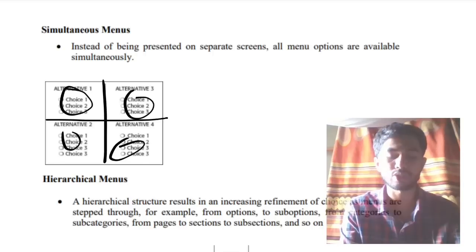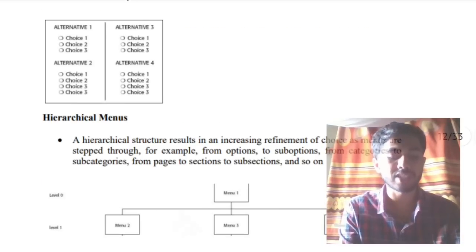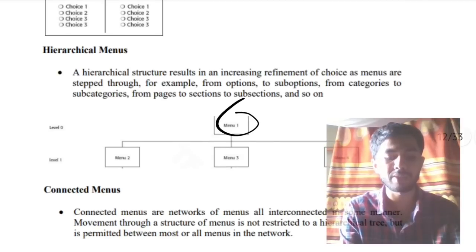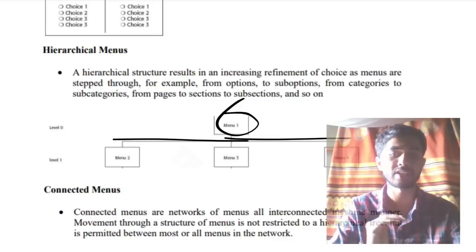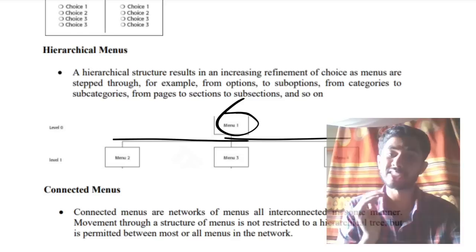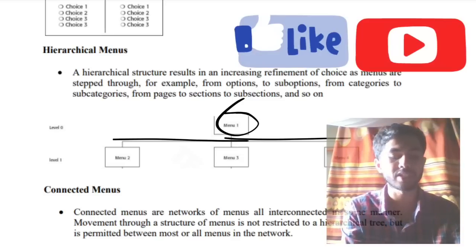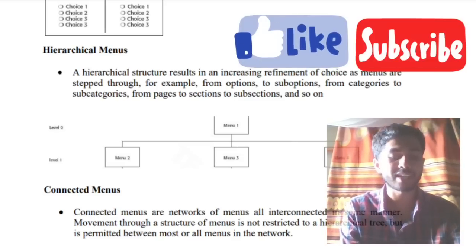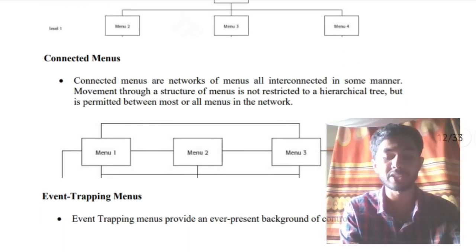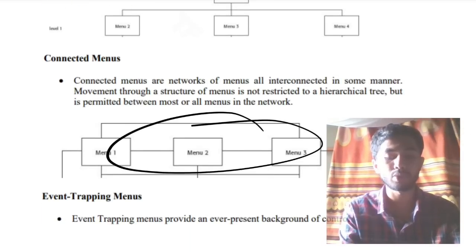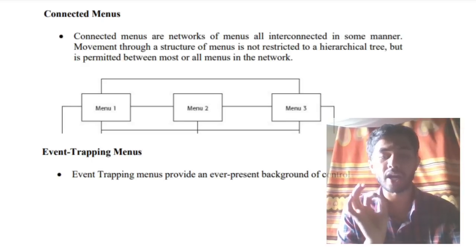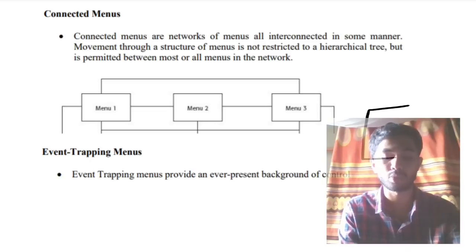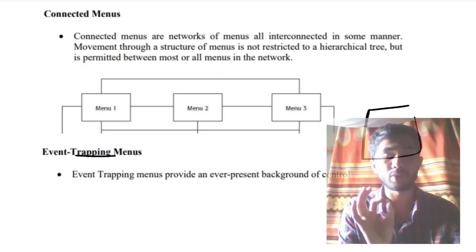H stands for Hierarchical Menus — like a tree or family tree structure. You have the superior level, then inferior levels going down, with sub-options known as levels. Then we have C for Connected Menus — menus that are connected with each other in a linked form. Finally, E stands for Event Typing Menu: in just one sentence, the background tasks are handled by event typing menus — whatever you do in the front, the background processing is performed by event typing menus.